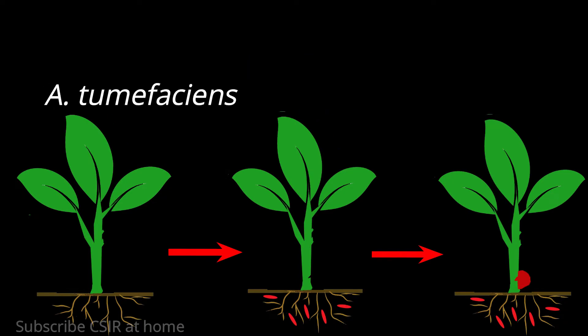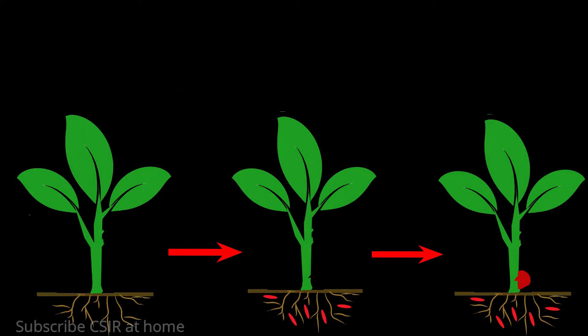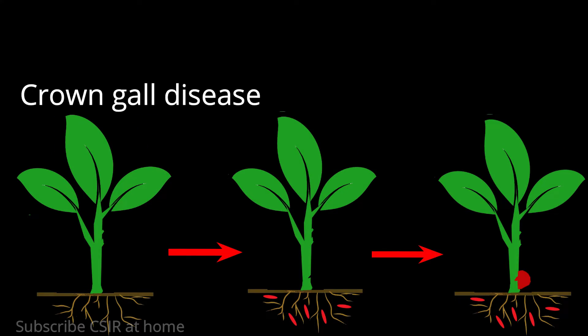Agrobacterium tumefaciens is a phytopathogen. As a normal part of its life cycle, it can genetically transform plant cells, and this genetic transformation leads to the formation of crown gall disease — a plant tumor.